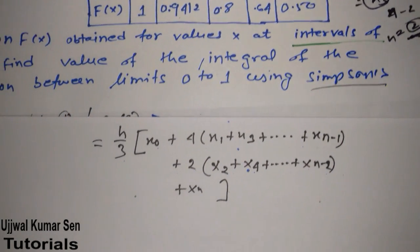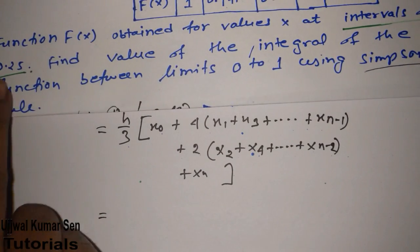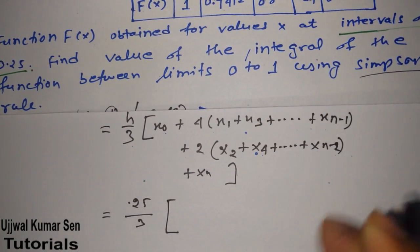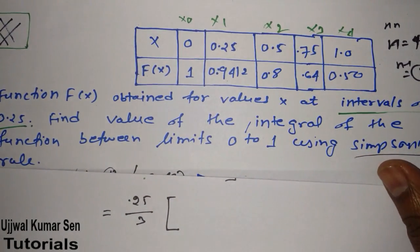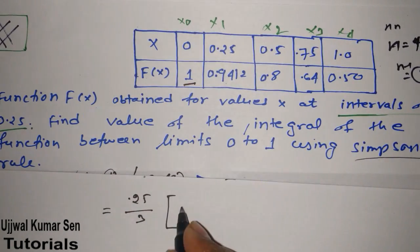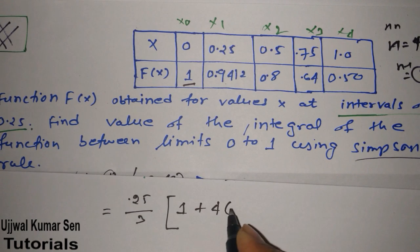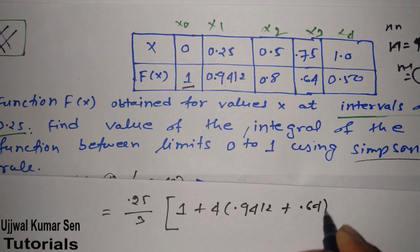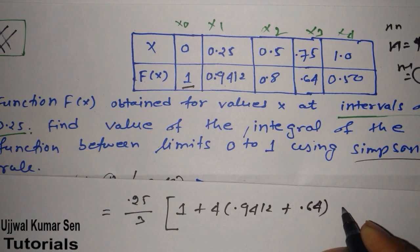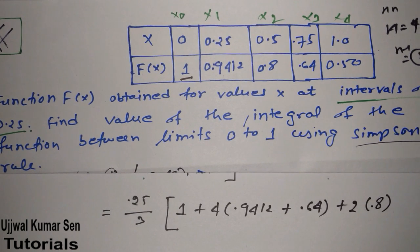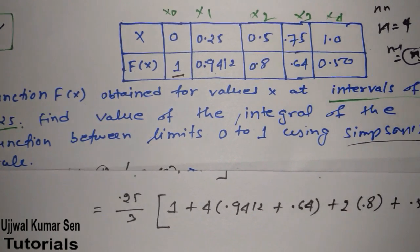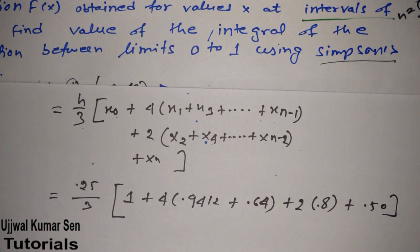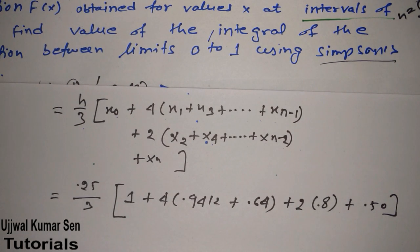H is equal to the interval, which is 0.25, so h is 0.25 by 3. What is the value of x naught? From this table we can say that x naught's value is 1, plus 4 times 0.9412 (that's x1), then we'll take x3, plus 2 times 0.8, plus x4 which is 0.50. Now look at the formula - the main formula I have shared with you, and the values I have written here.